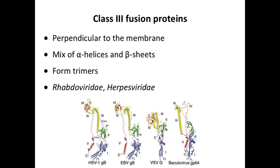There's also type 3 fusion proteins, which are like the HA of flu and the type 1s. These are perpendicular to the membrane. They tend to be a mix of alpha helices and beta sheets. They also form trimers. And you find these in rabies and herpes viruses.